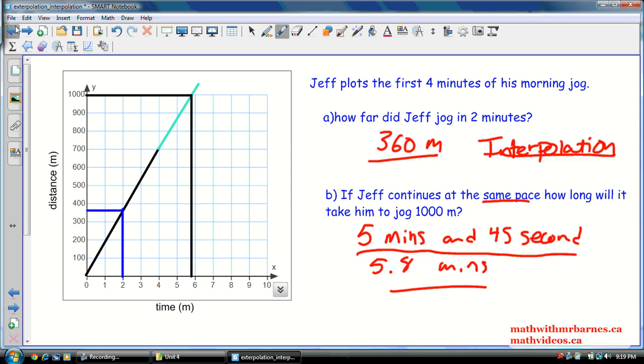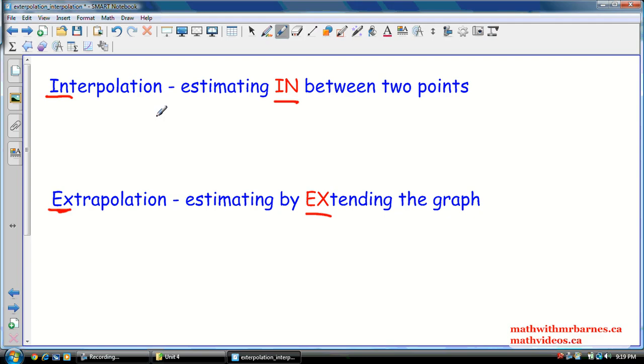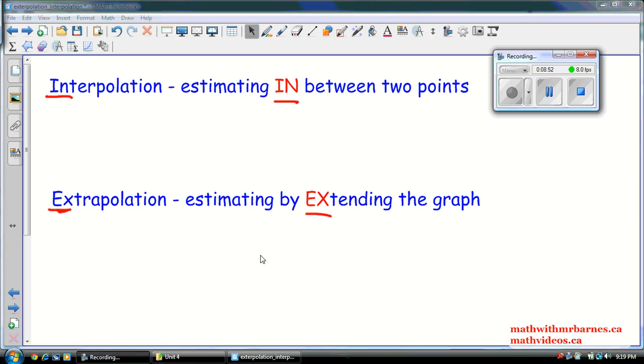All right, guys. So, I hope it's clear that interpolation is estimating in between two points. Extrapolating is estimating by extending the graph. Outside the data, this is inside the data. All right, guys. I hope this is clear. If you've got any questions, message me on YouTube. Check out my websites. I'll see you in class.